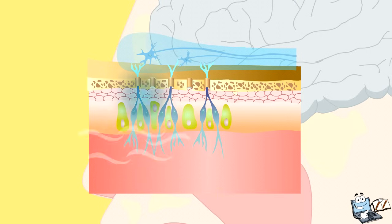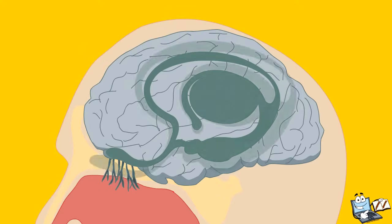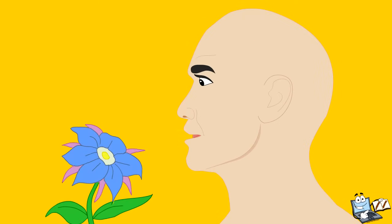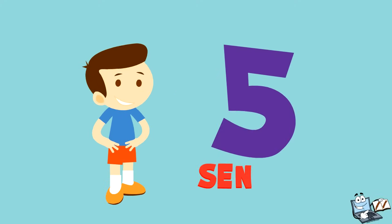This process generates a nerve impulse which travels directly to our brain. The part of the brain that processes smells is known as the limbic system. Thus, we smell things. Now you know about the five senses of your body.